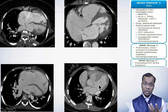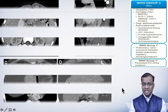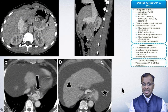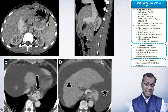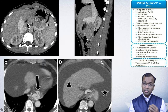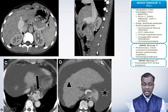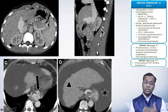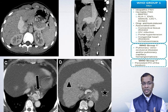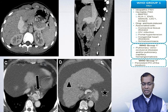For intracardiac shunts, echo is very good. But for extracardiac shunts, CT is excellent. We have seen cases where there is a shunt between the portal vein and the systemic vein — the portal vein draining directly into the IVC — causing a portosystemic shunt. This very rare entity is called Abernathy syndrome and is a cause of pulmonary hypertension.